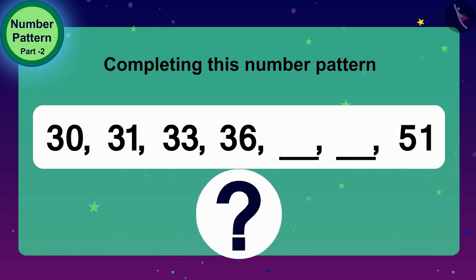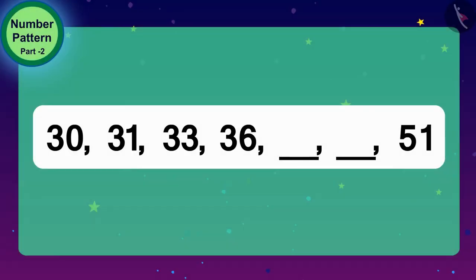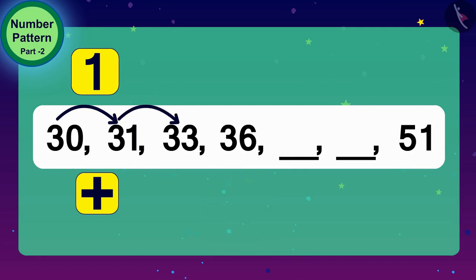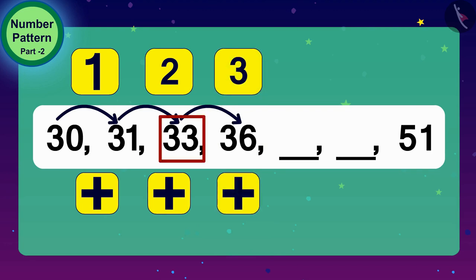Let us find the rule of this number pattern. What would we do if we had to reach from 30 to 31? Exactly, we will add 1 to 30. And what do we have to do to get 33 from 31? Yes, we have to add 2. And finally, if we have to reach 36 from 33, what will we do? 3 will be added to 33.